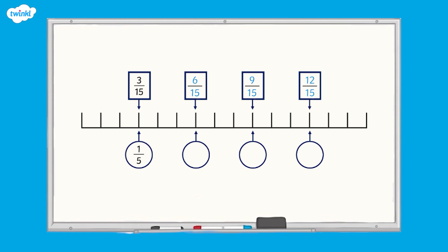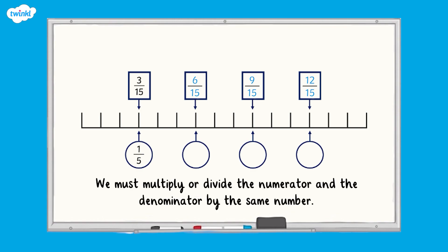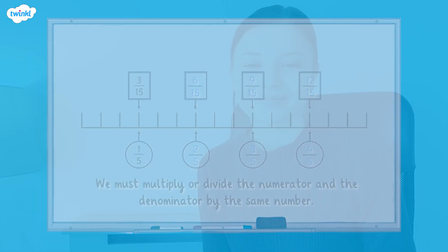The next step is to identify an equivalent fraction for each one and write it in its simplest form. Remember the rule: to find an equivalent fraction we must multiply or divide the numerator and the denominator by the same number. For all of these fractions, the numerator and the denominator are both multiples of 3, so we divide them by 3 to get two fifths, three fifths and four fifths. These fractions are in their simplest form. If you want to find out more about simplifying fractions, you can check out our other video on the Twinkle website.